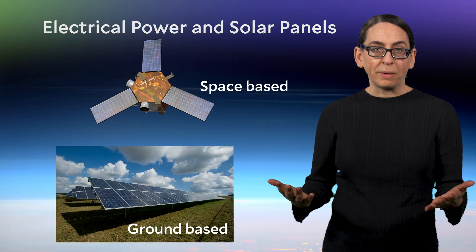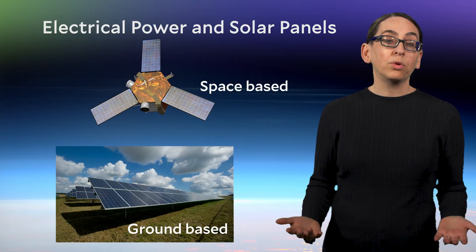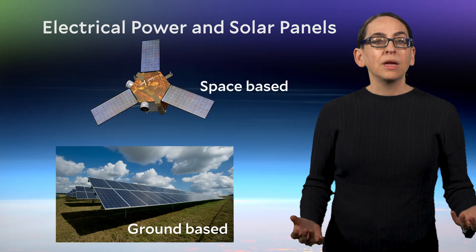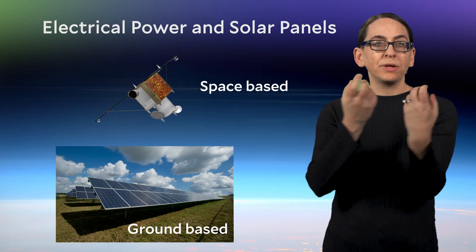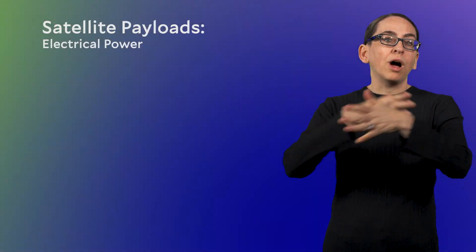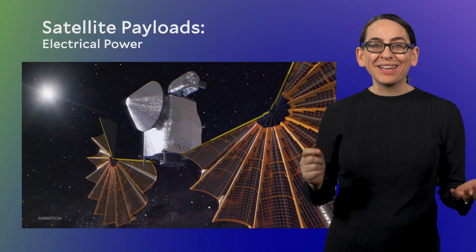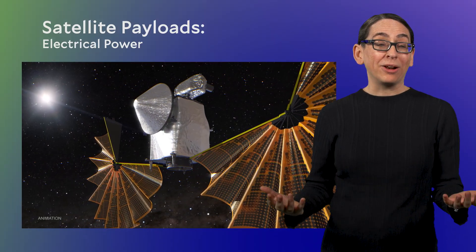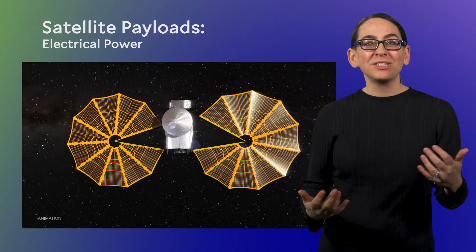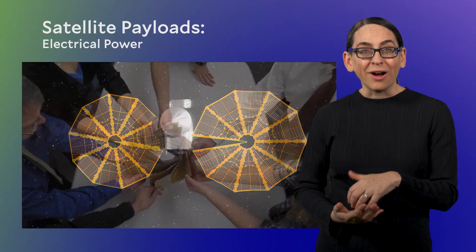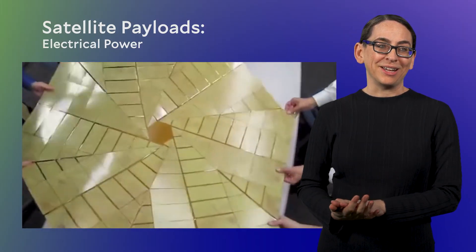And the larger your solar panels, the more area, the more power you can generate. Satellites are launched with their solar panels folded up and will unfold the panels once in orbit. And in the quest to get the most area once the solar panel is unfolded, satellite designers will sometimes consult with origami experts to optimize their designs.